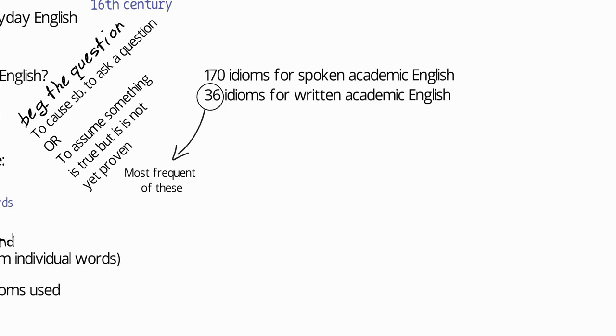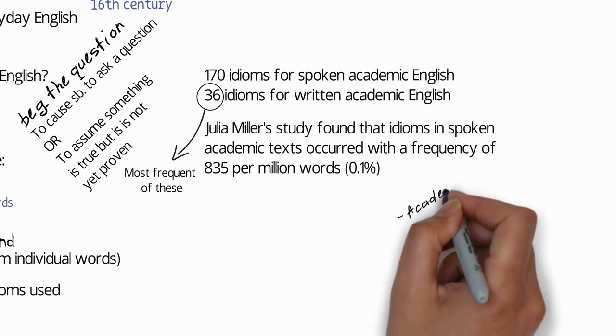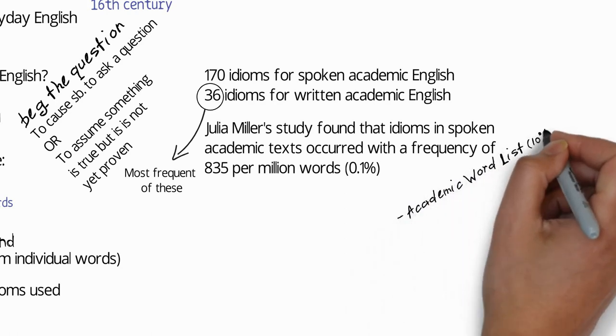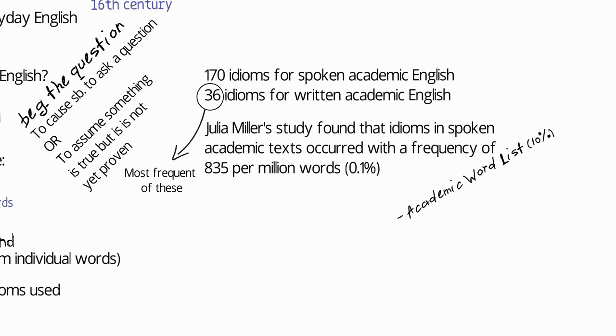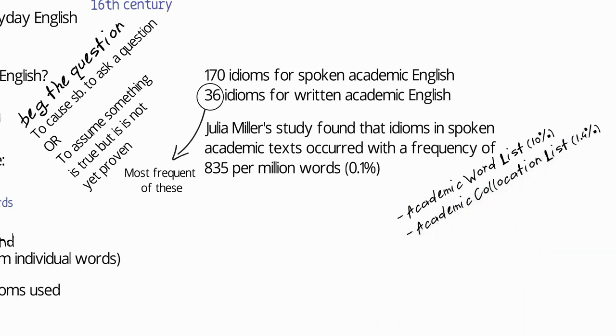So Miller's study identified 170 idioms for spoken academic English and 36 for written academic English. And the 21 idioms that we'll see later are actually the most frequent ones from the list of idioms for written academic English. Miller's study found that idioms in spoken academic texts occurred with a frequency of 835 per million words, which is a little under 0.1%.